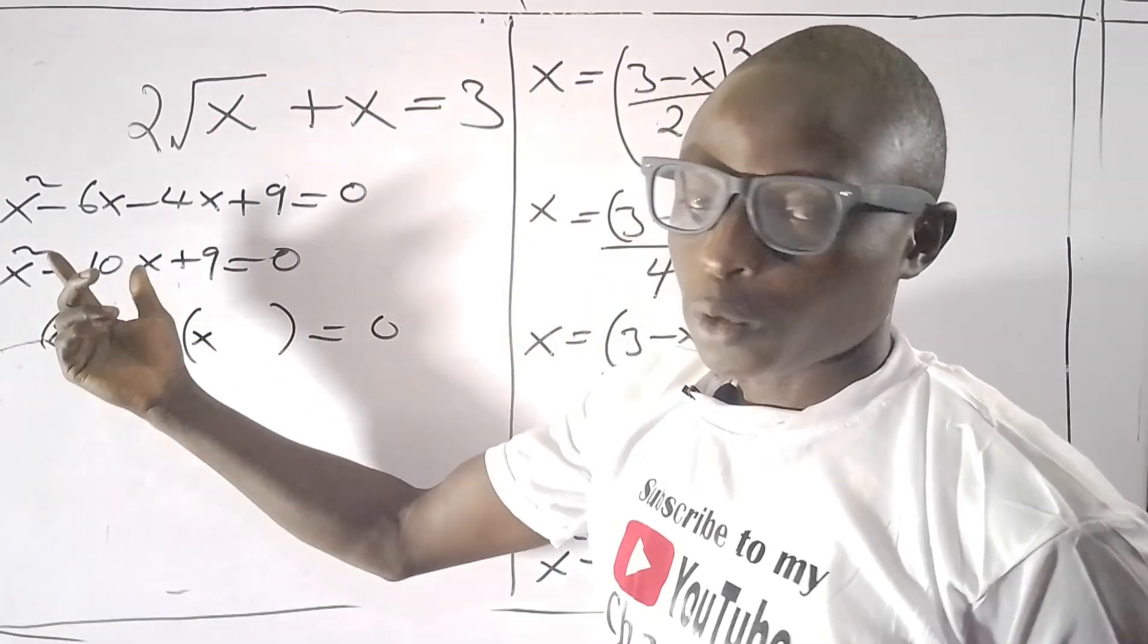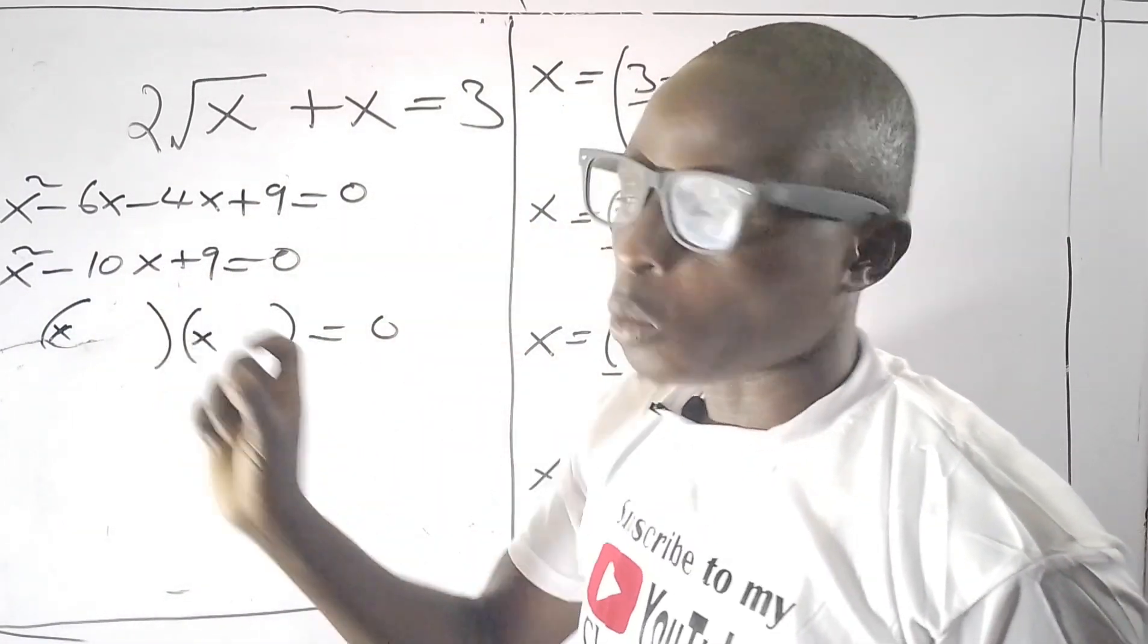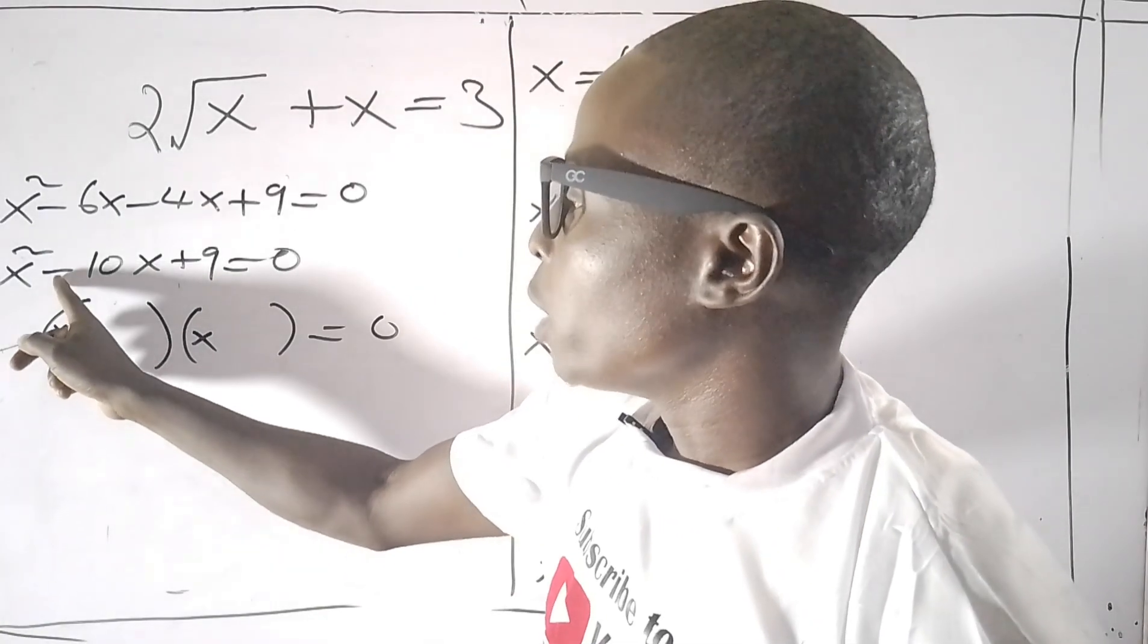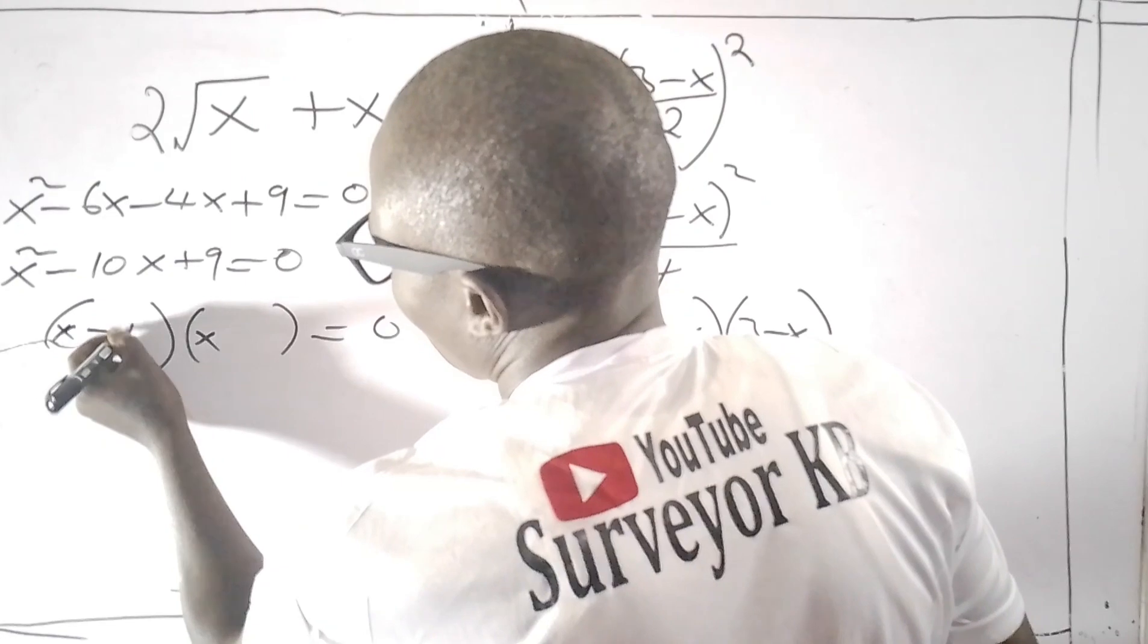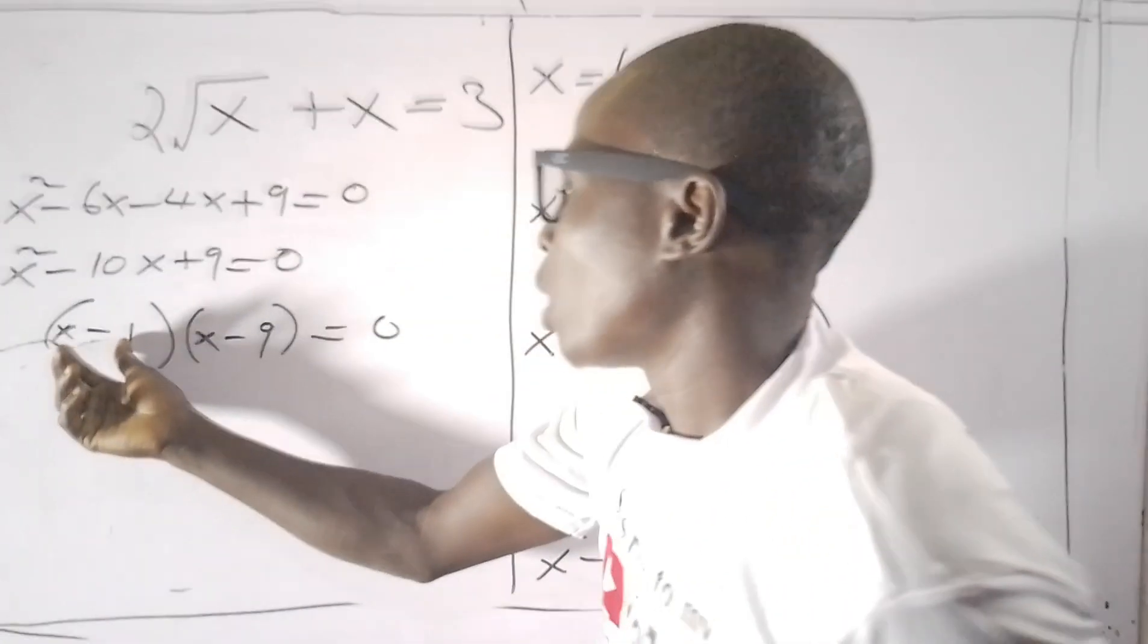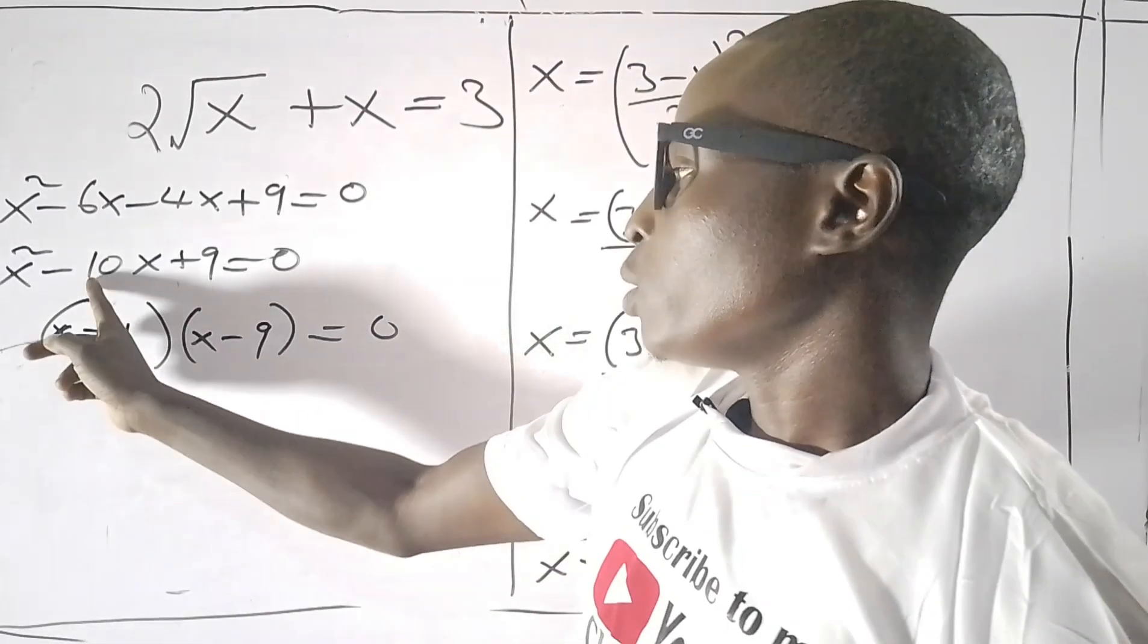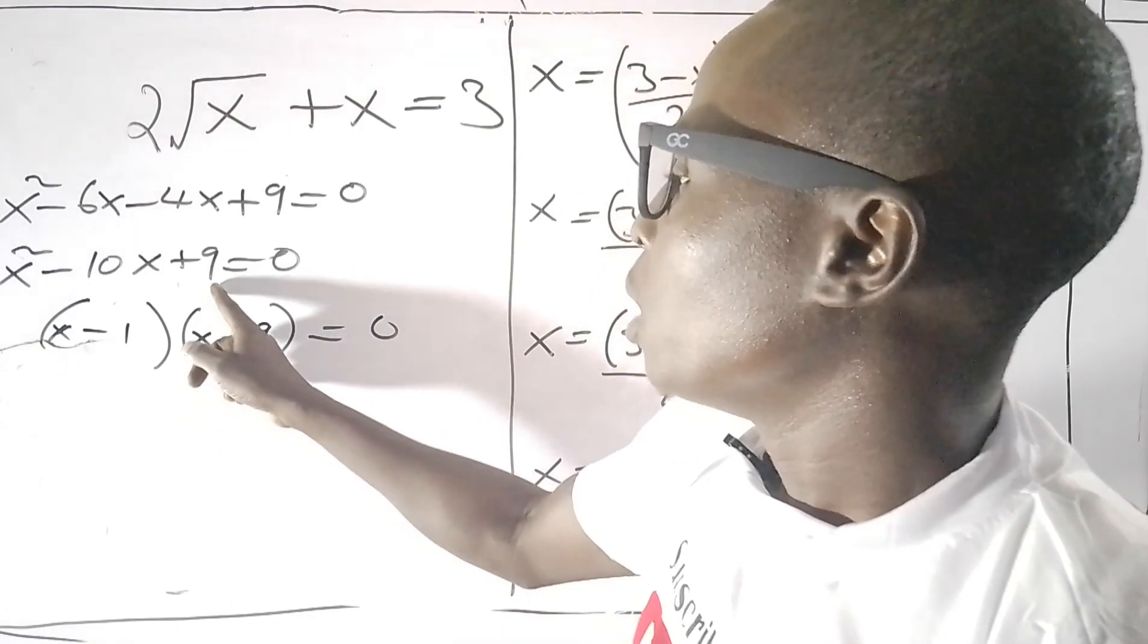I need to look for two factors that when multiplied give positive 9, and when subtracted give negative 10. These numbers are minus 1 and minus 9, because minus 1 times minus 9 is positive 9, and minus 1 minus 9 is minus 10.